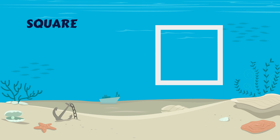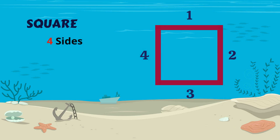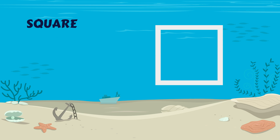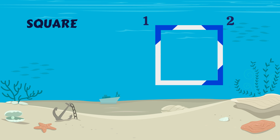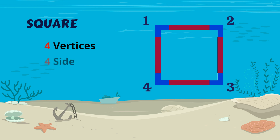Let's count the sides. One, two, three, four. A square has four sides. Let's count the vertices. One, two, three, four. A square has four vertices and four sides.